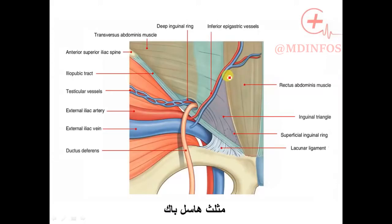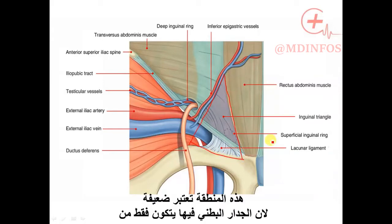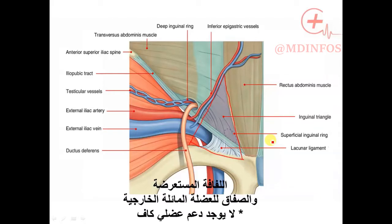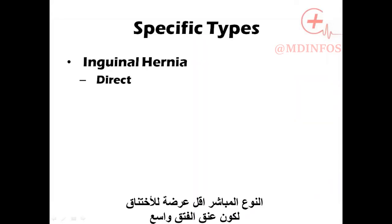Hesselbach's triangle is composed of the inferior epigastric vessels on the lateral side, the rectus abdominis muscle on the medial side, and the pubic bone on the inferior side. This area is considered weak because the abdominal wall is composed only of the transversalis fascia and the external oblique aponeurosis. The direct hernia is less prone to strangulation because of its wider neck.